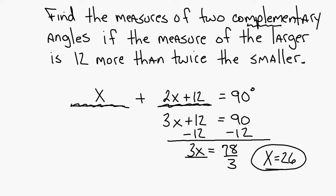So if 26 is the smaller, 2 times 26 is 52 plus 12, 64 degrees. Questions? All right.